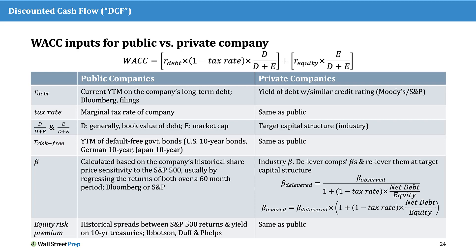Returning to WACC, we'll quickly go through the differences in WACC analysis for a private company compared to a public company. Using a ballpark WACC and sensitizing it would work just fine. Because there is no publicly available market information for the company we are valuing, we need to figure out how to calculate the cost of debt, the capital structure, and beta. We'll go through that in the next few pages.